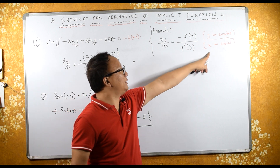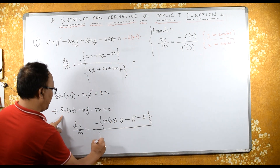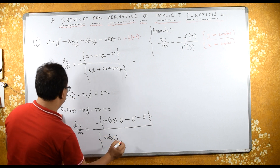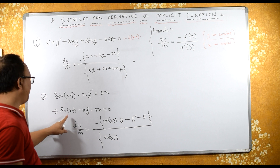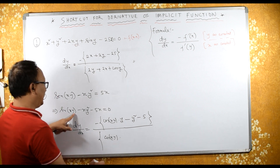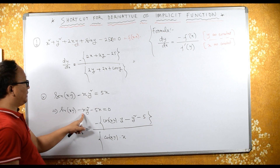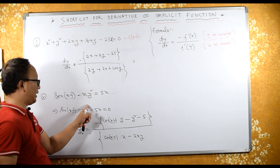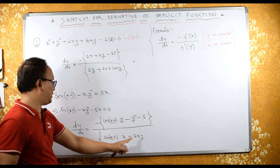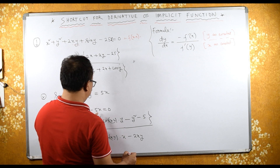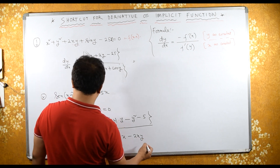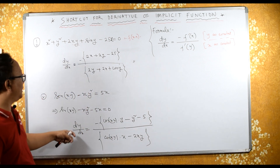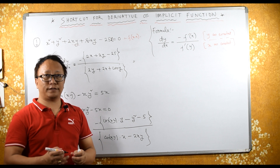Now for the denominator, differentiating with respect to y and treating x as a constant: sin gives cos(xy), and differentiating xy with respect to y gives x. Then minus 2xy, because the differential of y² is 2y and x is treated as a constant. The last term becomes 0, so we do not write anything. These are the shortcut tricks for the derivative of implicit functions.